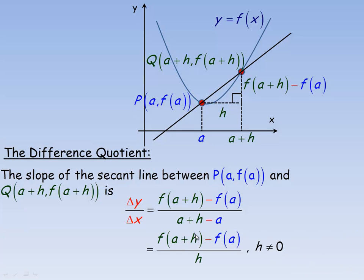And of course, it's valid unless h was 0. h cannot equal 0, because if h were equal to 0, then this point would actually be on top of that point, and the run would have a value of 0, so this expression would not be defined. h can get really close to 0, but it can never actually equal 0.